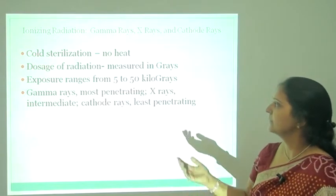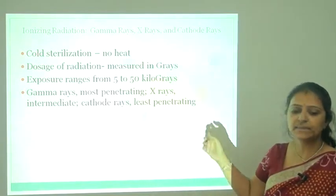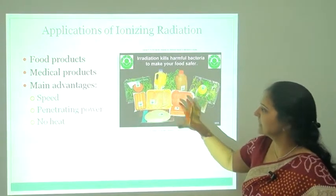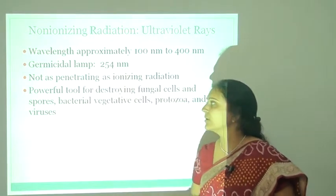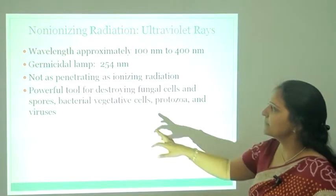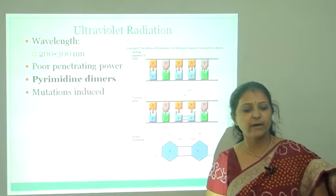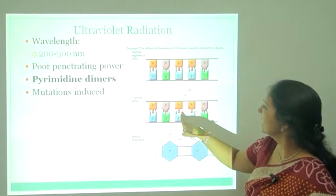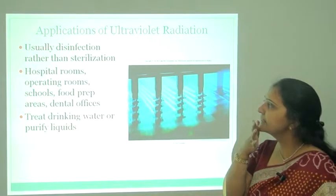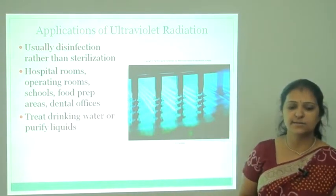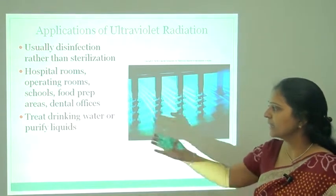Non-ionizing radiation or ultraviolet rays require a wavelength of 254 nanometers and are not as penetrating as ionizing radiation. UV is a powerful tool for destroying fungal cells and spores, bacterial vegetative cells, protozoa, and viruses. Ultraviolet radiation requires 200 to 300 nm, has poor penetration power, and forms pyrimidine dimers — specifically thymine-thymine dimers — in the nucleic acids of cells. UV radiation is usually used as disinfection rather than sterilization, and is used for disinfection of hospital rooms, operating rooms, schools, food packets, and to treat or purify drinking water.